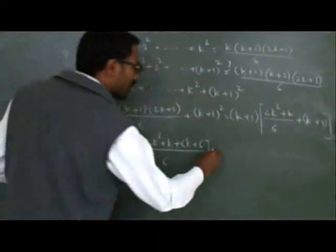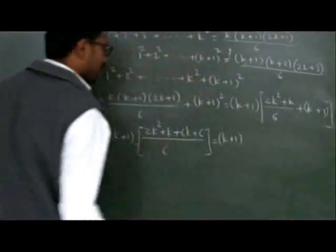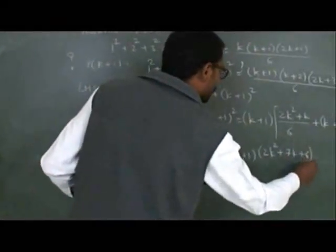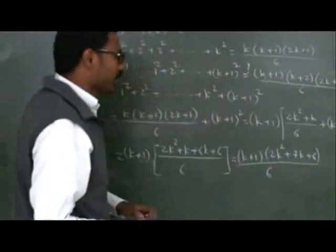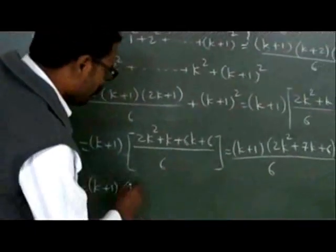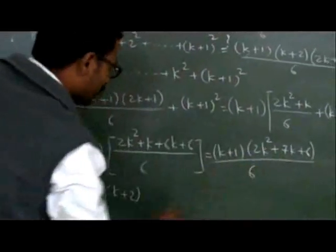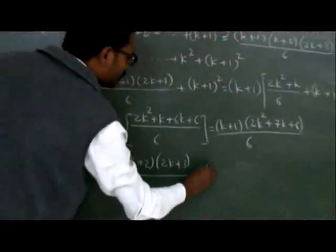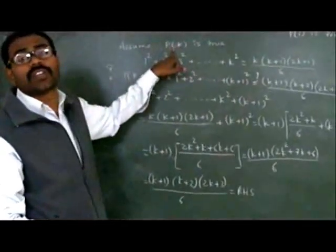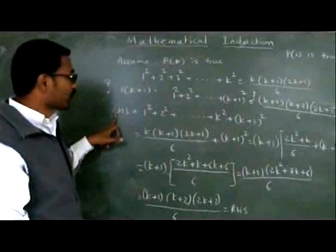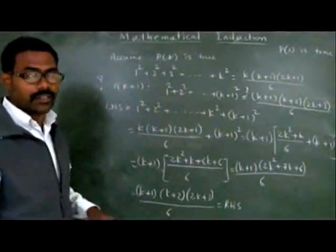This simplifies to (k+1)(2k² + 7k + 6) / 6. Factoring 2k² + 7k + 6, we get (k+2)(2k+3). So the expression becomes (k+1)(k+2)(2k+3)/6, which equals the RHS of P(k+1). Thus, going from LHS to RHS, we have shown this formula holds and P(k+1) is true.